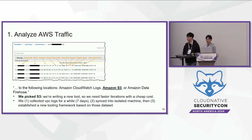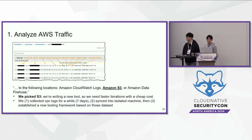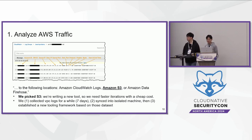VPC Flow Logs can be sent to AWS CloudWatch Logs, S3, or Kinesis Data Firehose. We chose S3 for faster iteration and cost efficiency. We collected VPC logs for seven days and synced them to an isolated machine for security purposes, then established a new tooling framework based on that dataset.